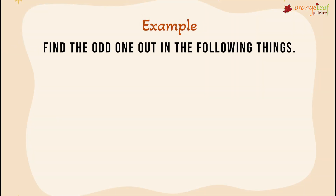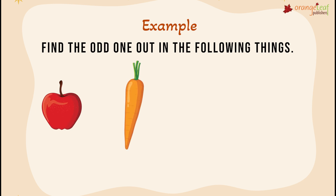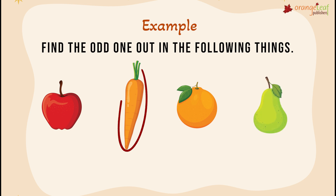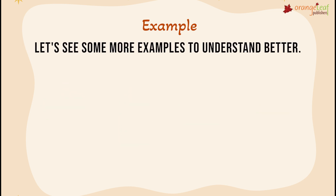For example, find the odd one out in the following items: an apple, a carrot, an orange, and a pear. Carrot is the odd one as it belongs to the vegetable family. All other options belong to the fruit family.